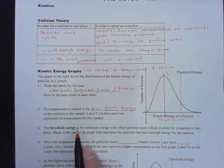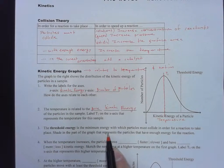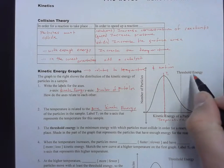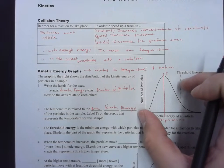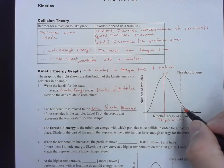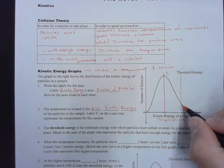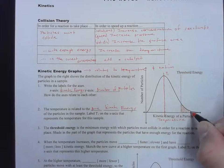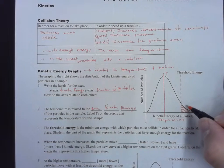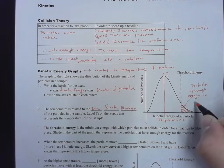The threshold energy is the minimum energy with which particles must collide in order for a reaction to take place. Shade in the part of the graph that represents the particles that have enough energy for the reaction. Let's say this is a reaction mixture still at 70 degrees — in order for the reaction to move forward, a certain number of particles have to go past that threshold energy. These are the particles that have enough energy to start the chemical reaction.